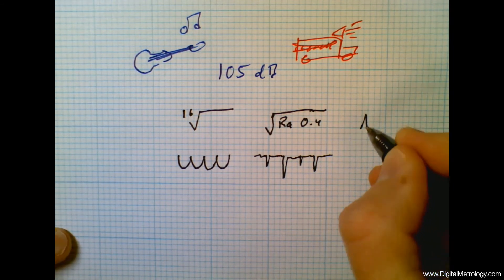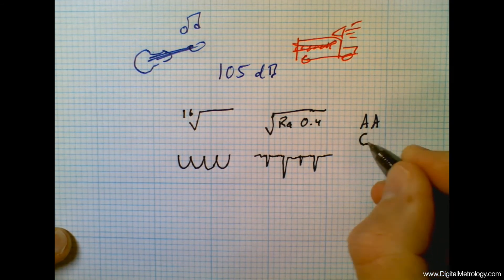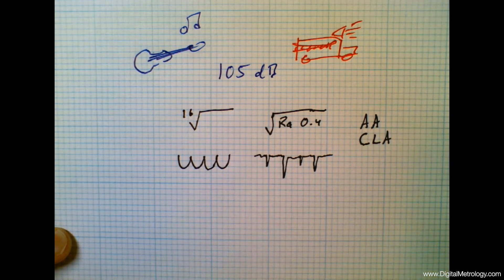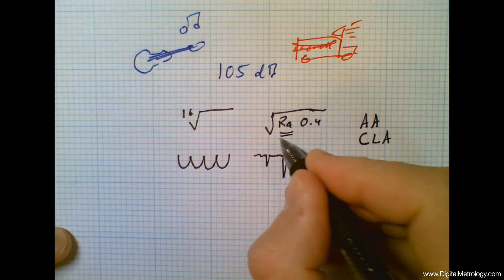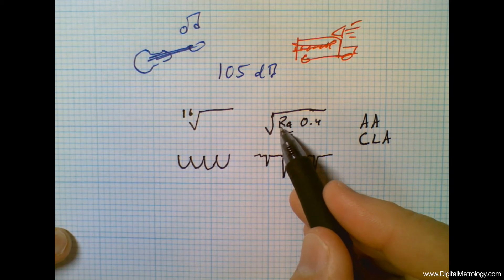Now a long time ago this was called AA, arithmetic average, or CLA, centerline average. Today we just call it RA, average roughness. A is for average, R is from the profile it came from, the roughness profile.